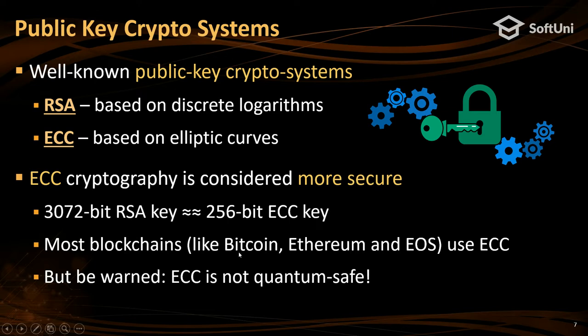Smaller keys mean miners need smaller hard drives to keep transactions. That's why most cryptosystems on the blockchain use elliptic curve cryptography, elliptic curve signatures. Bitcoin, Ethereum, EOS — they all use elliptic curve cryptography, more precisely the SECP256K1 curve. In elliptic curves we have many curves; some have good cryptographic properties, some less. They have different key lengths.